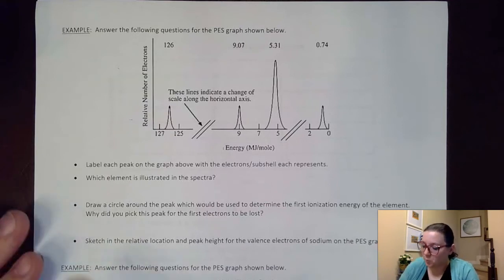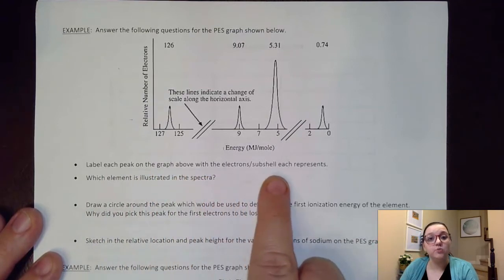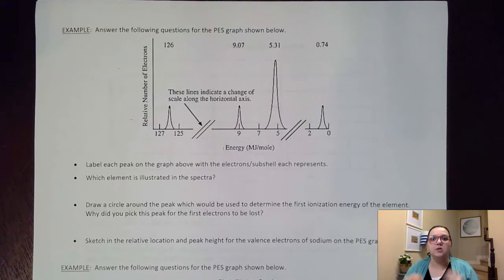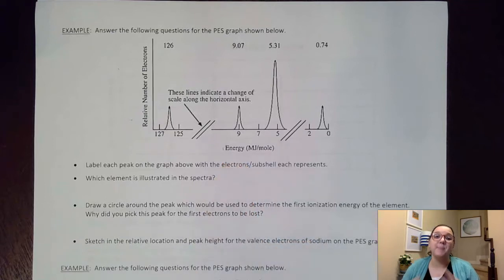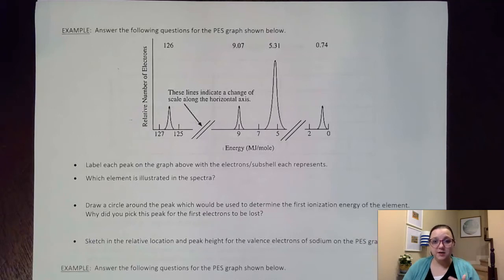Looking at this one here, it wants us to first label each peak on the graph with the electron subshell each represents. In order to do that, I first need to figure out which end of the graph represents the closer-to-the-nucleus peak. They give us down here that this axis is energy, but really what it is, it's a binding energy — how much energy do I need to remove those electrons, which is different than how much energy those electrons possess. So we have to be careful there.